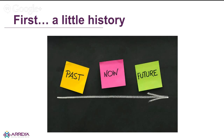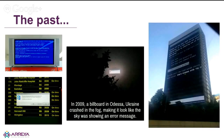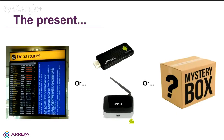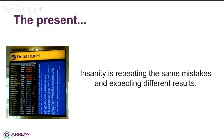Let's go through a little history about the past, present, and future of digital signage. The past is pretty familiar — we've all seen screens showing blue screen of death messages, update notifications, or billboards displaying crash messages. This is what we want to move away from. Currently we still have the old way of doing things. As the saying goes: insanity is repeating the same mistakes and expecting different results. We're putting up the same signage with the same operating system and expecting something different to happen. We want to change that.